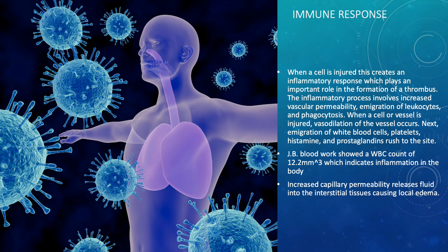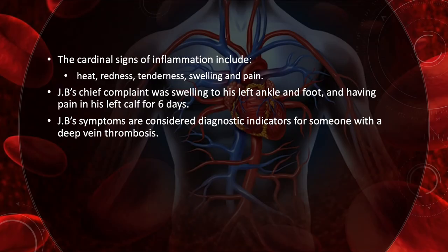We noted that in JB's lab work, he had a white blood cell count of 12.2, which indicates inflammation in the body. Increased capillary permeability releases fluid into the interstitial tissues, causing local edema. The cardinal signs of inflammation include heat, redness, tenderness, swelling, and pain. JB's chief complaint was swelling to his left ankle and foot and pain in his left calf for six days, which are considered diagnostic indicators for deep vein thrombosis.